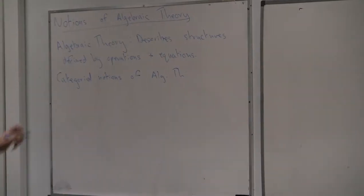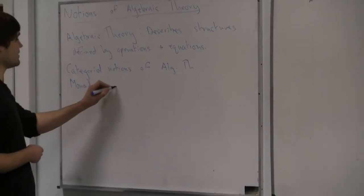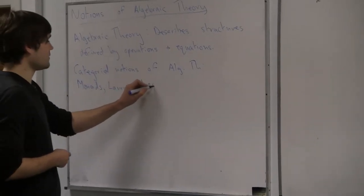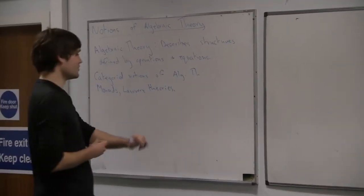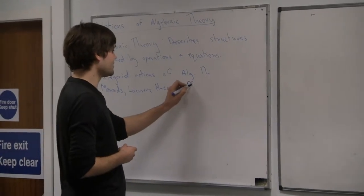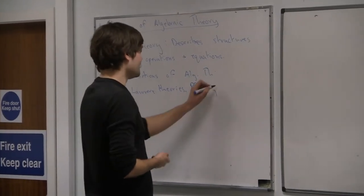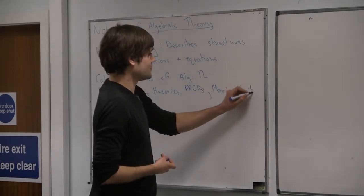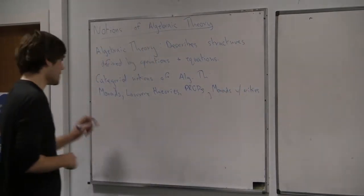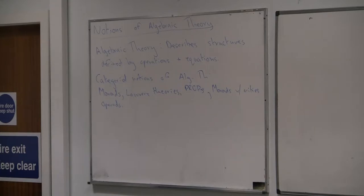I'll just list some examples: monads, Lawvere theories — these are probably the two big ones — then there are more exotic things like props, monads with arities, operads. These can all be looked at in some way as a notion of algebraic theory.